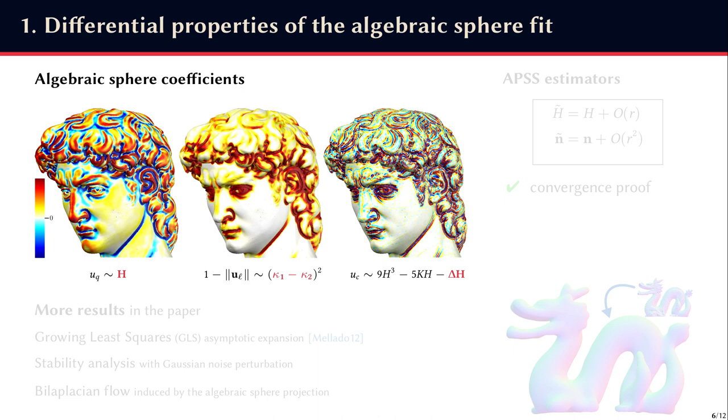So on the left, we can see that uq is linked to the mean curvature of the surface. At the center, the norm of ul is related to the square difference of the principal curvatures, so it defines some kind of anisotropy measure of the surface. And on the right, uc is a mix of mean and Gaussian curvatures, as well as delta h, which is the Laplacian of the mean curvature, or the bilaplacian of the surface. So it means it's a differential property of order 4, and indeed we can see on the point cloud that this parameter highlights very fine details of the sampled surface.